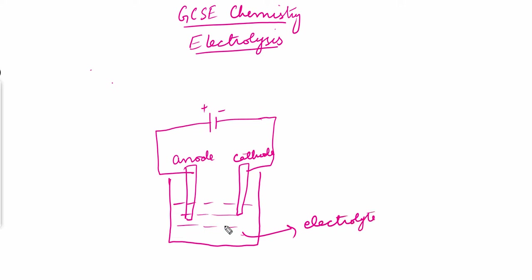In the electrolyte there are positive ions and negative ions. The positive ions move towards the cathode because the cathode is the negative electrode, and the negative ions move towards the anode because it is the positive electrode. Due to this movement of ions, current flows through the electrolyte, and this whole process is called electrolysis.